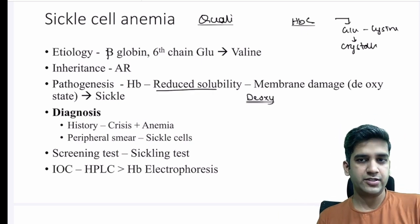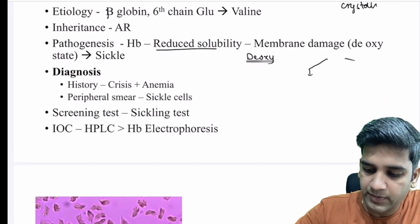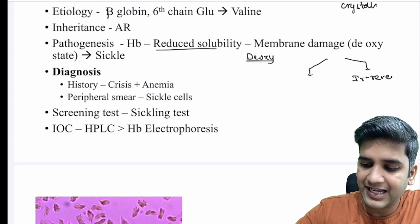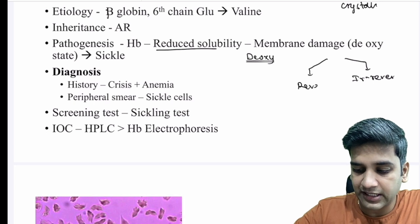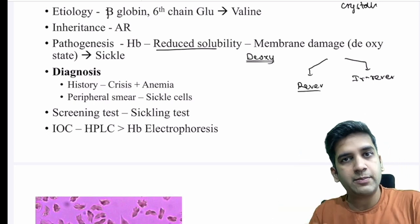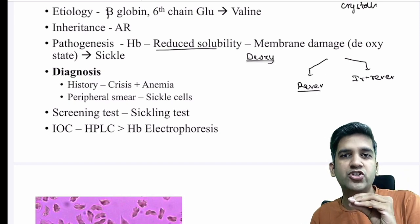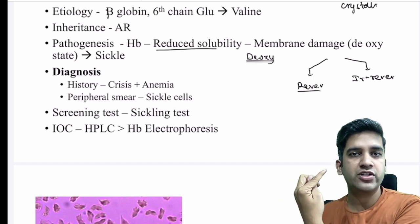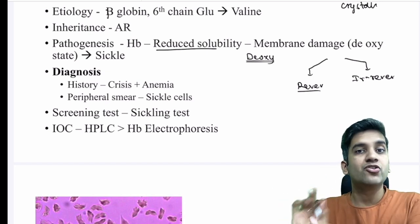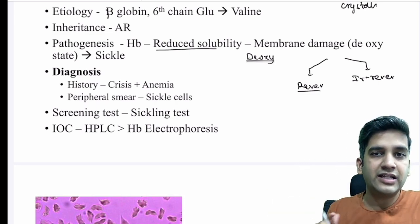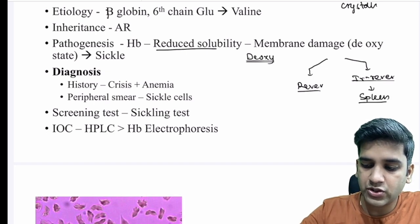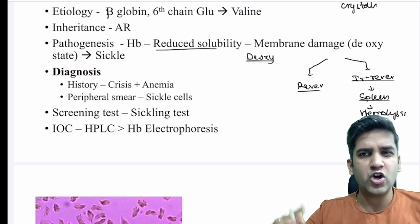There are two types of sickle RBCs: irreversibly sickled RBCs, which can never return to normal, and reversibly sickled RBCs. The reversible sickle RBCs go through a cycle — in the deoxygenated state they sickle with membrane damage, then in the oxygenated state they return to normal. Repeated cycles of this result in irreversible sickling. Irreversibly sickled RBCs get trapped in the spleen, causing hemolytic anemia — primarily extravascular hemolysis.